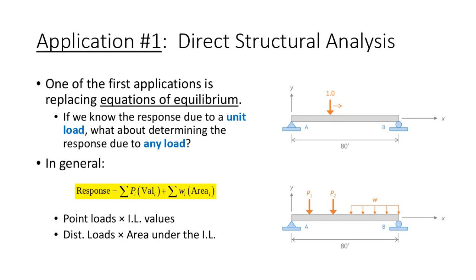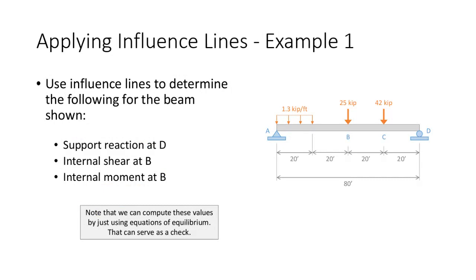To illustrate that, I have an example where we determine the influence line, the support reaction at D, the internal shear at B, and the internal moment at B, directly using influence lines. First, I want to show you how we'd do this through equations of equilibrium, then show you how to do it with influence lines.